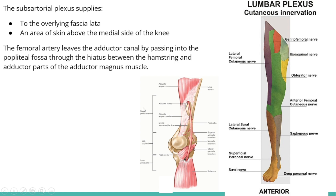Then what happens to the femoral artery? The femoral artery leaves the adductor canal by passing into the popliteal fossa through the adductor hiatus. This is located within the adductor magnus muscle, and it passes between the hamstrings and the adductor part of the adductor magnus muscle.